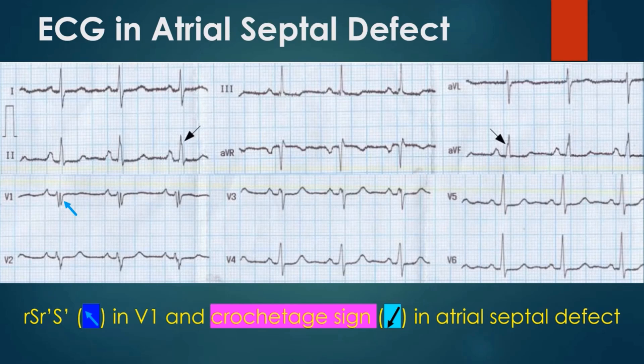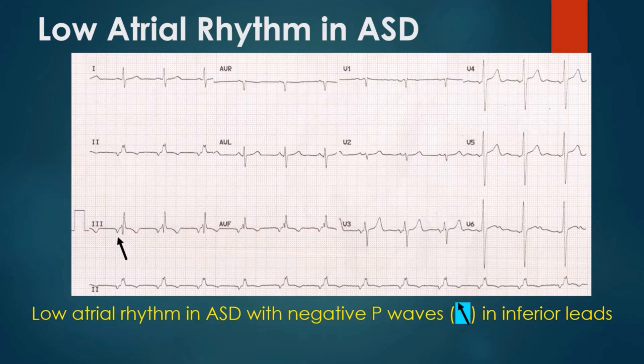This ECG also shows right atrial overload as evidenced by P wave amplitude of 3 mm in lead 2. Another ECG in ASD shows inverted P waves in inferior leads 2, 3, and AVF. This pattern indicates that the atrial activation is spreading from below upwards, suggestive of low atrial rhythm. Low atrial rhythm can occur with sinus venosus atrial septal defect, as the sinus node may be defective so that an alternate focus arising in the low atrium gives the dominant rhythm.